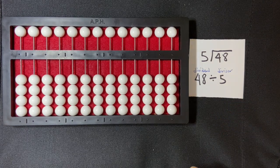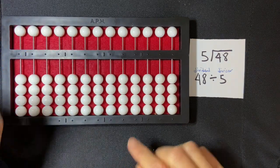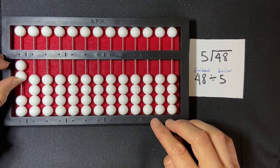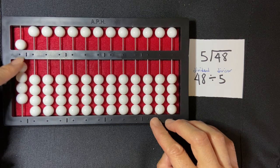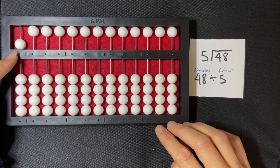I start by setting my divisor on the far left hand side of my abacus. So I'm going to set 5: 1, 2, 3, 4, 5. So I'm using the counting method here. So I need to do that 4, 5 exchange.